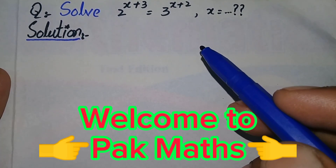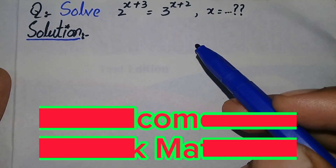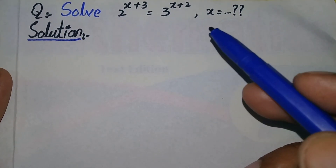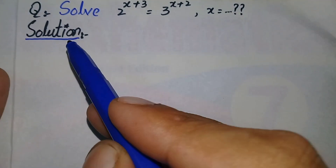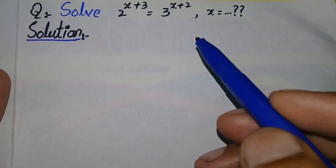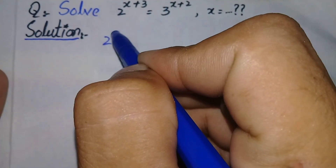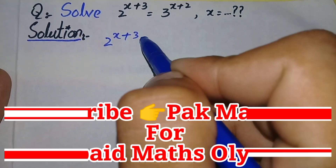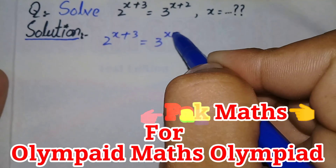Hello, welcome to Parkmas. In this video we will learn how to solve this nice Olympiad math question. Let's start the video. First of all, we will write the solution and rewrite this question. So let's start: 2 raised to power x plus 3 is equal to 3 raised to power x plus 2.